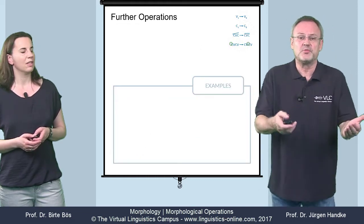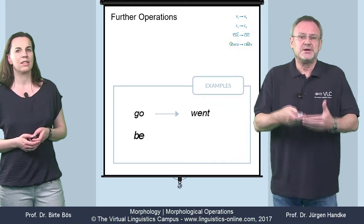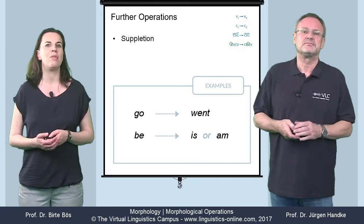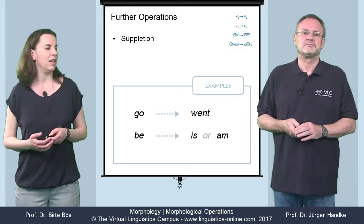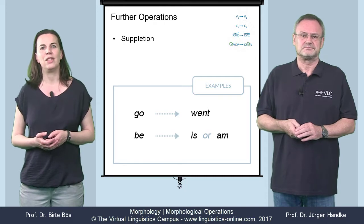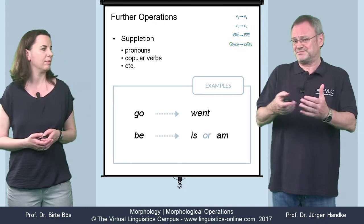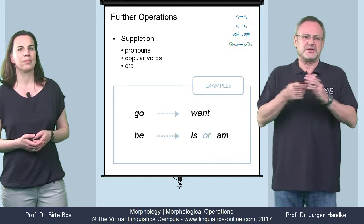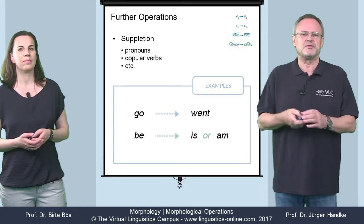And what about forms such as 'go' / 'went,' or 'be' / 'is' / 'am'? They constitute the most extreme form of base modification, where one base form is replaced by another. This is most frequently encountered in the closed classes of the grammar — that is, pronouns, copular verbs, and so on. Suppletion is thus a morphological operation that expresses no systematic similarity between the forms of a paradigm.